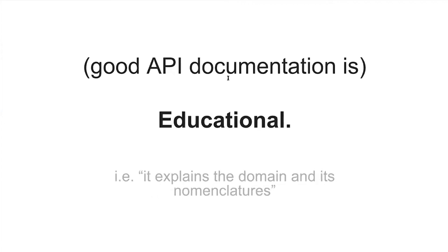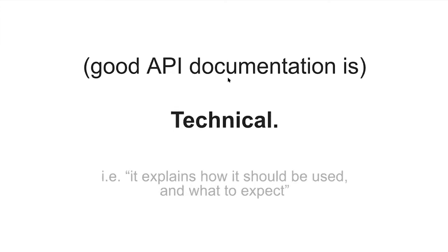Good API documentation is also educational — teaching the user about the domain, its problems and solutions, its domain-specific language, and how your API approaches a situation. Identifying teachable moments and including them in the documentation is key. Obviously, good documentation is also technical — producing technically correct instructions is of paramount importance. Everything else is aspirational. You must get this correct.